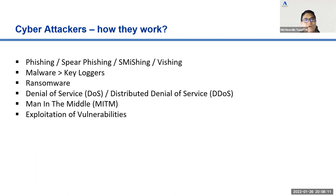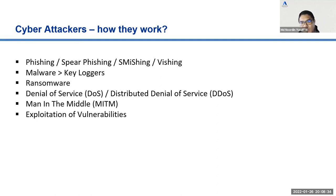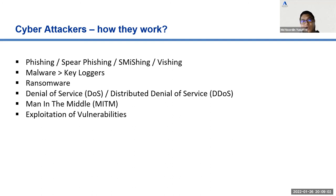A denial-of-service attack denies you access to a service — for example, if someone launches a DoS attack on your network, you can't access the internet. A man-in-the-middle attack is when the attacker sniffs the network traffic between you and your customer to extract confidential information; the way to protect against this is encryption. Exploitation of vulnerabilities occurs when web or mobile applications are not patched, allowing attackers to exploit those vulnerabilities and extract confidential data.